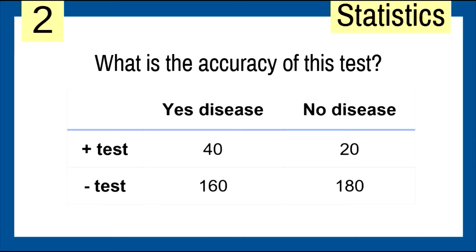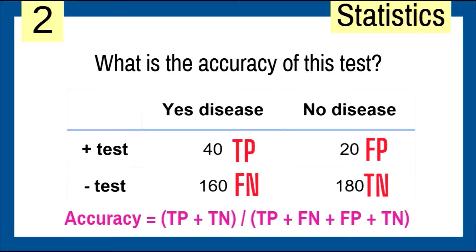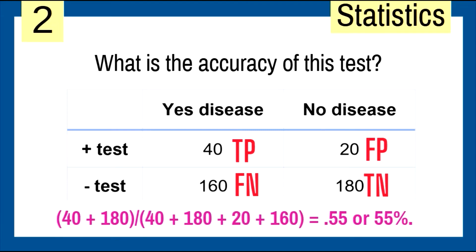What is the accuracy of this test? Let's fill in our chart — true positive, false negative, false positive, and true negative. Accuracy means the percent we've identified correctly — we got the bullseye. That comes from true positive and true negative. So: true positive plus true negative divided by the total population in our sample. That's 40 plus 180 over the total, which gives 55%.